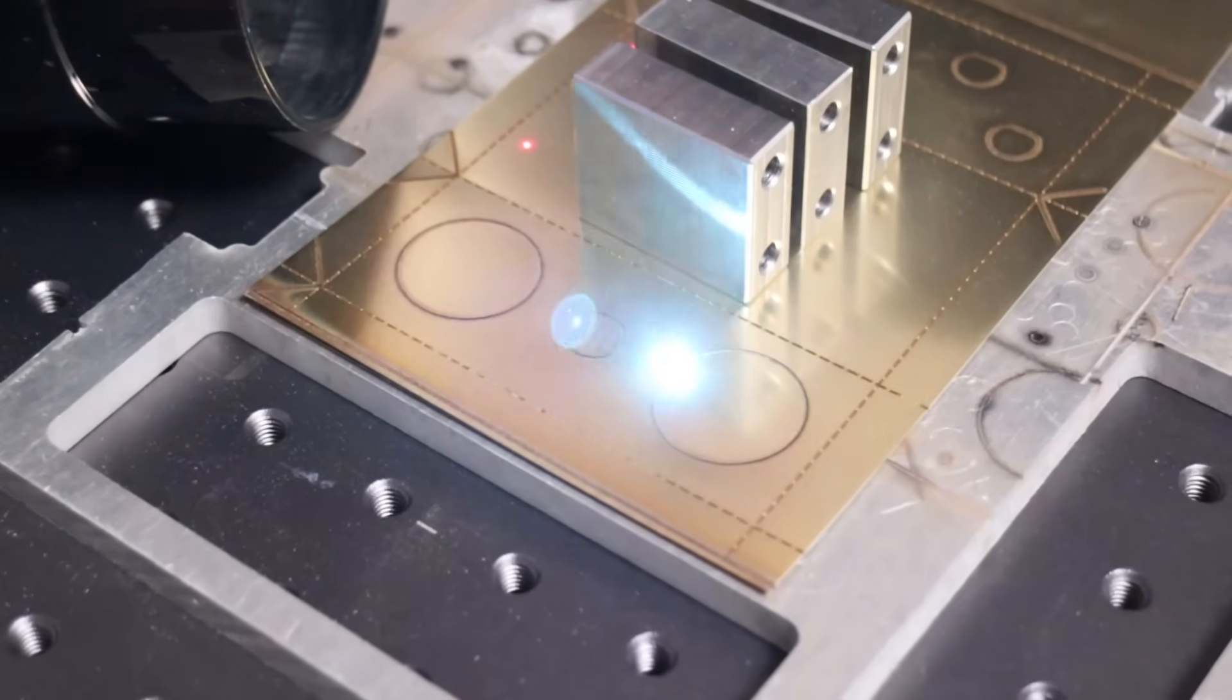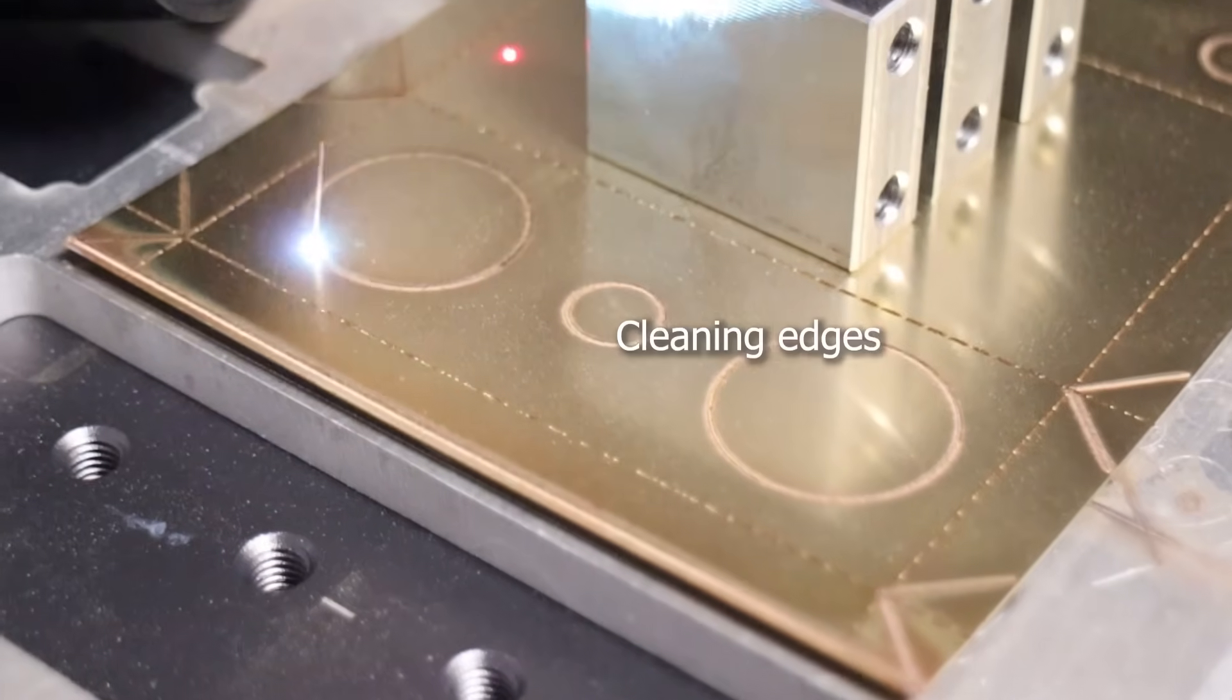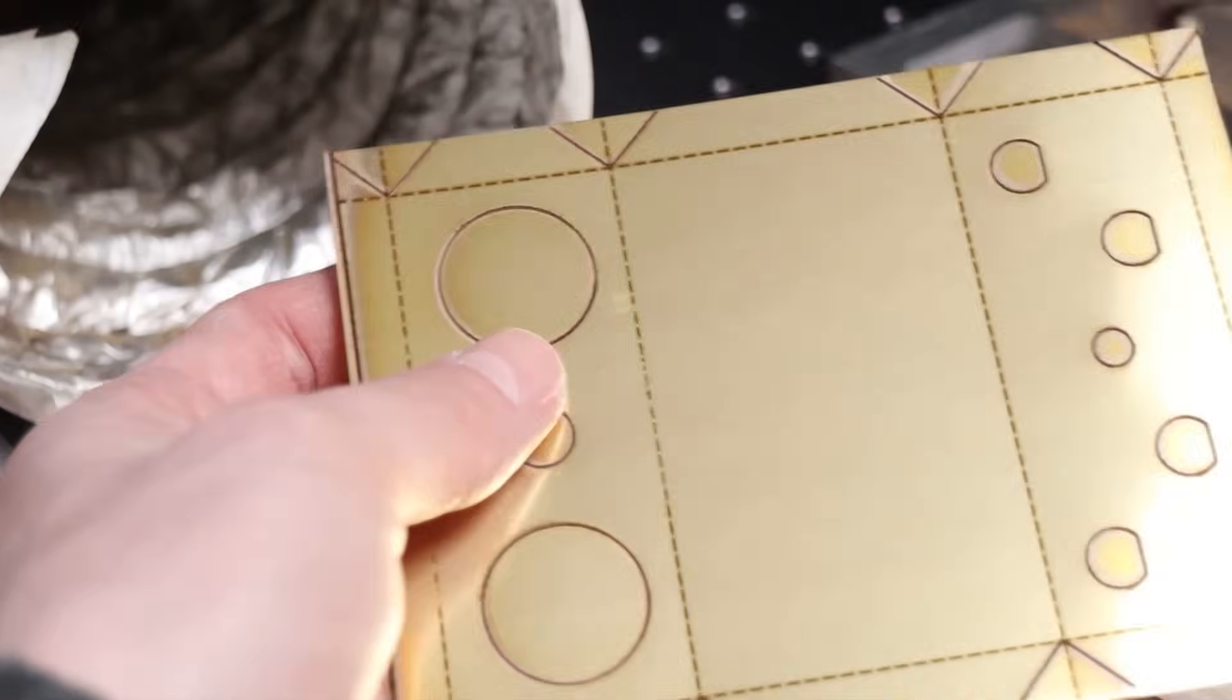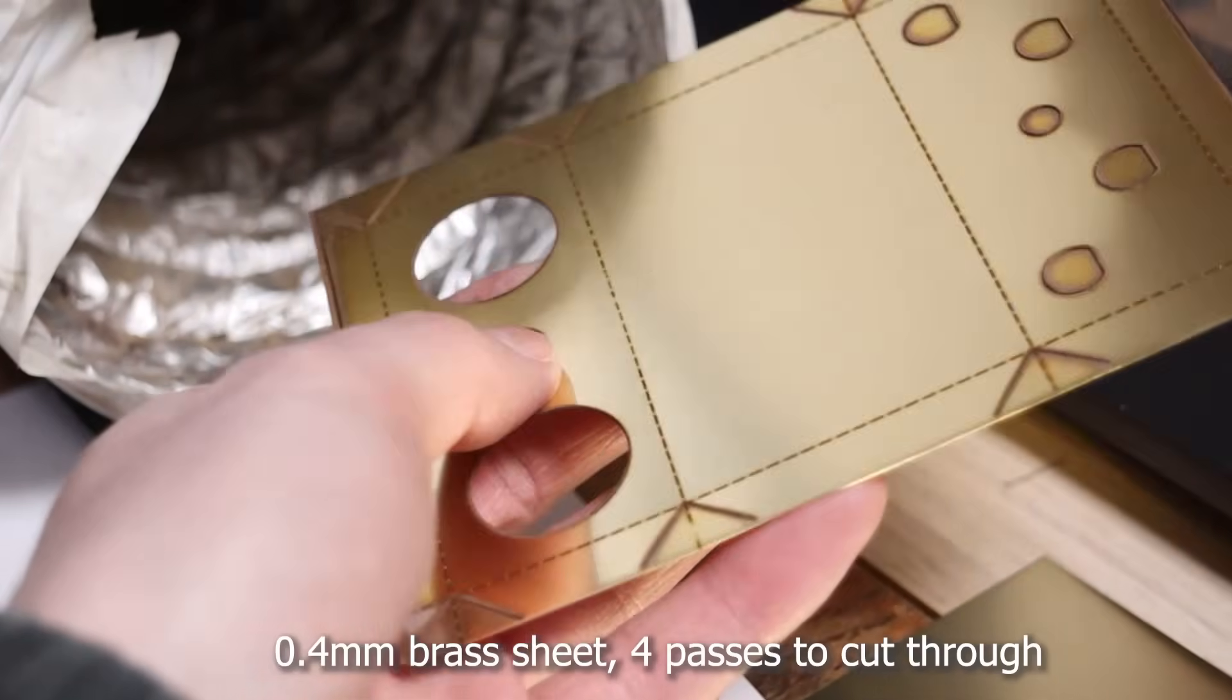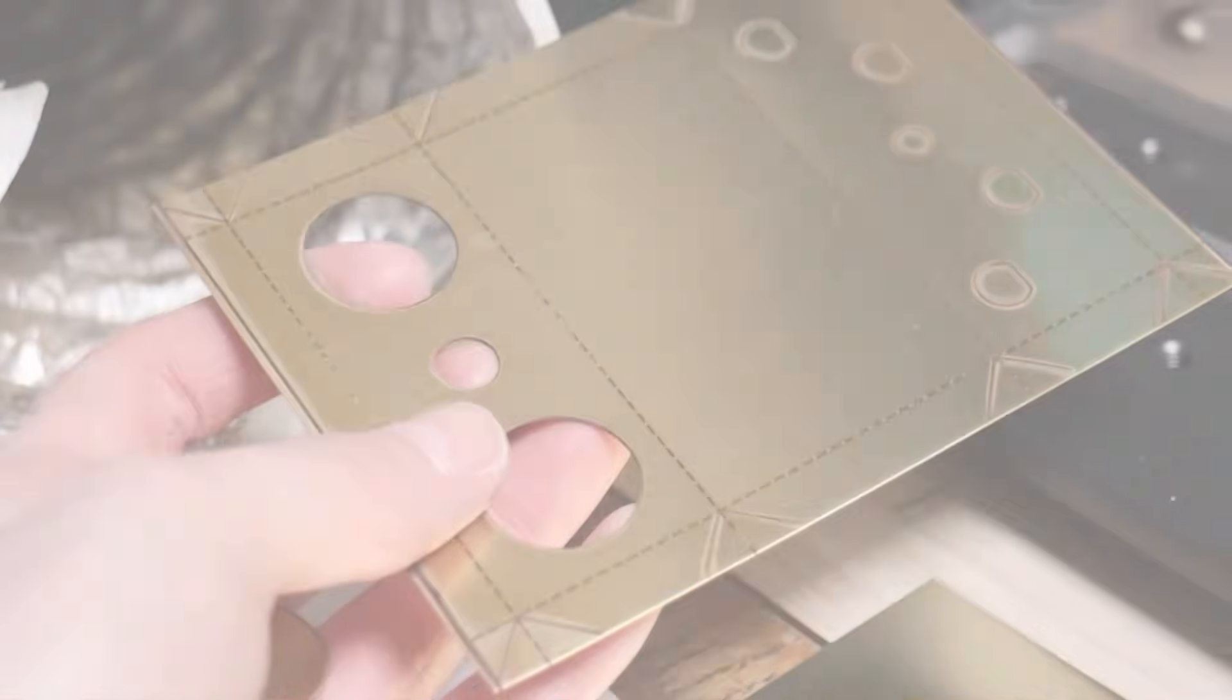Lower-powered machines struggle with laser cutting when using larger lenses because the power density drops significantly. The larger the area, the bigger the laser spot, resulting in lower energy concentration and weaker cutting performance.